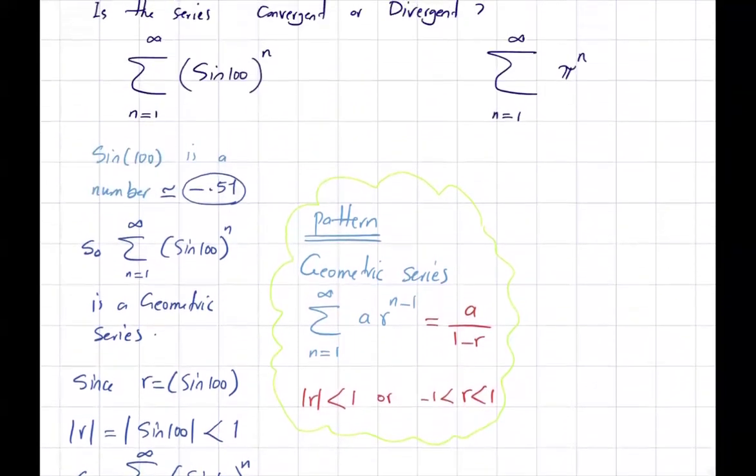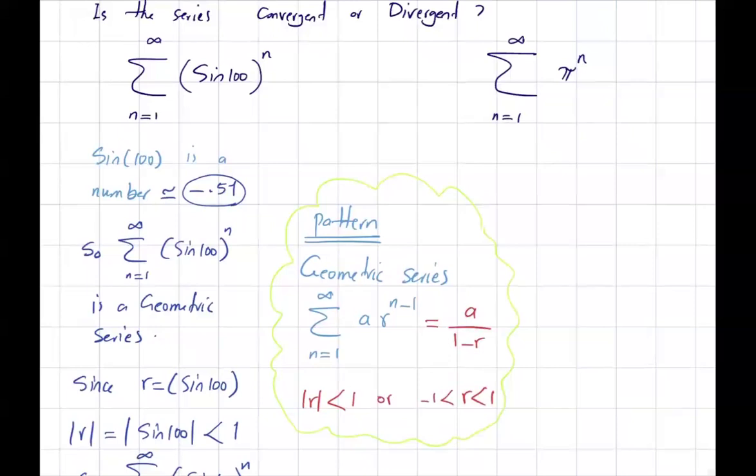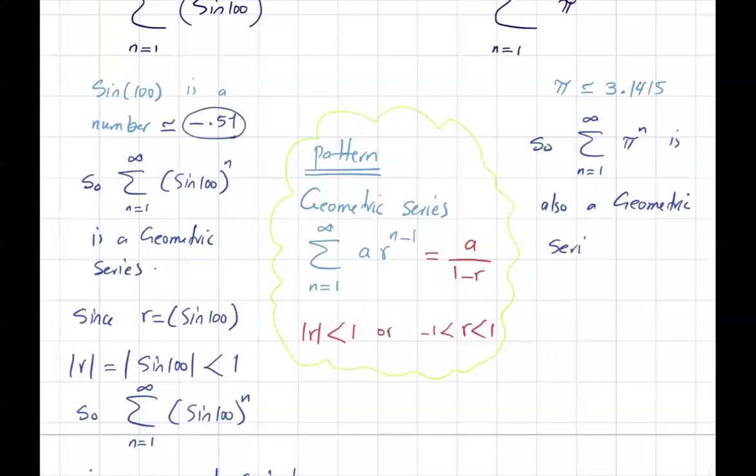Now, what about the second one? Here, what do I have? I have π. Pi is approximately 3.1415 and so on. Basically, you have a geometric series as well. The summation of π to power n, n starts from 1 goes to infinity, is also a geometric series.